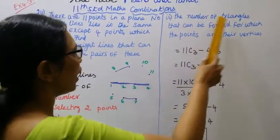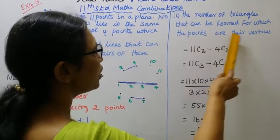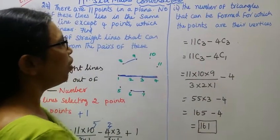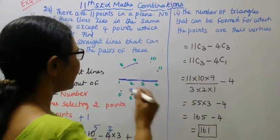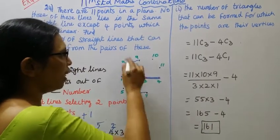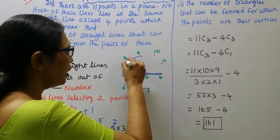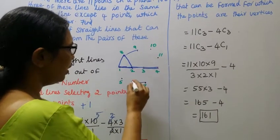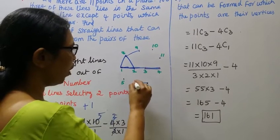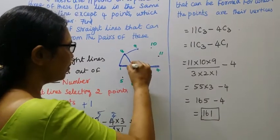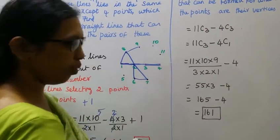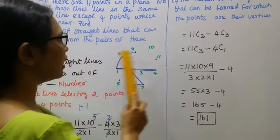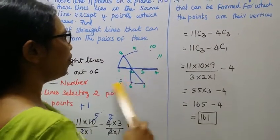The number of triangles that can be formed for which the points are their vertices. The number of triangles - this is one straight line: one, two, three. So, number of triangles selecting three points out of 11 points.